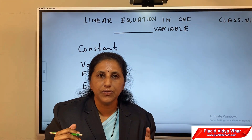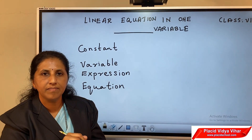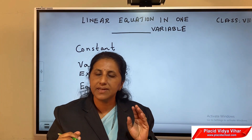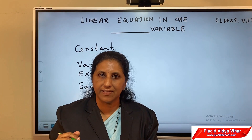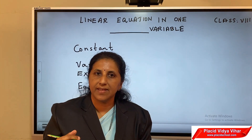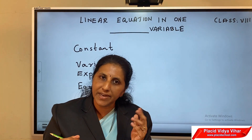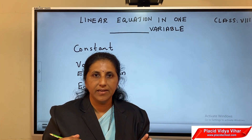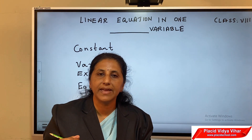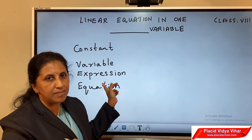Let's go through constants. What are constants? Constants are fixed values — the term itself says that. Next, variables. Variables are something that is varying. To represent a variable, we use the small letter English alphabets.